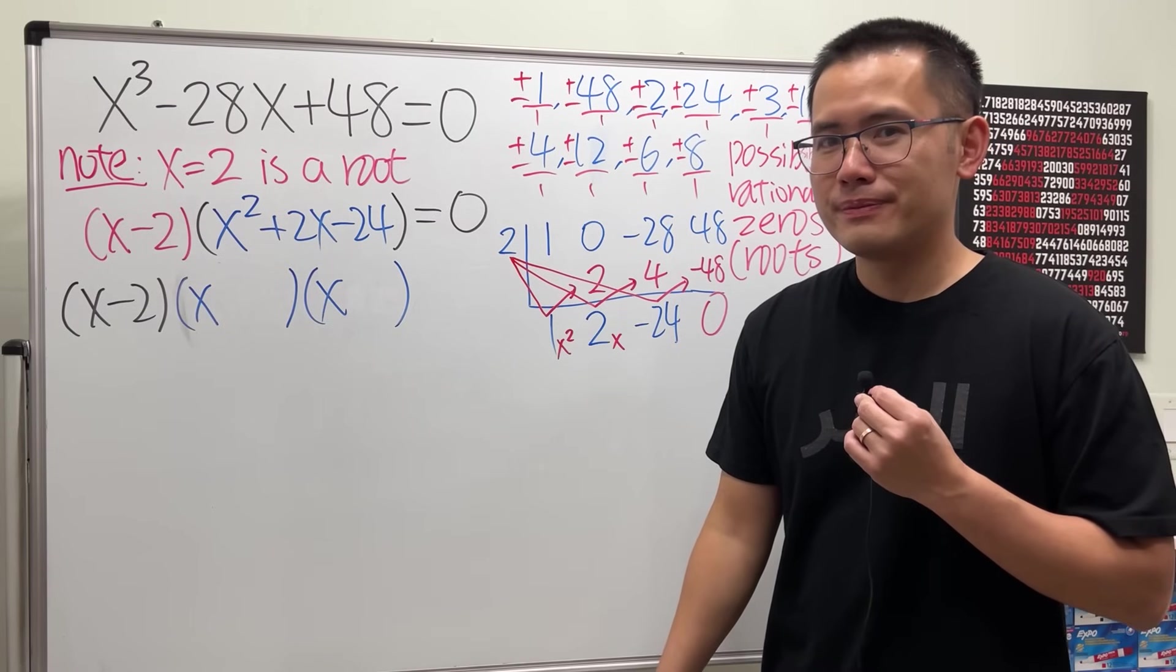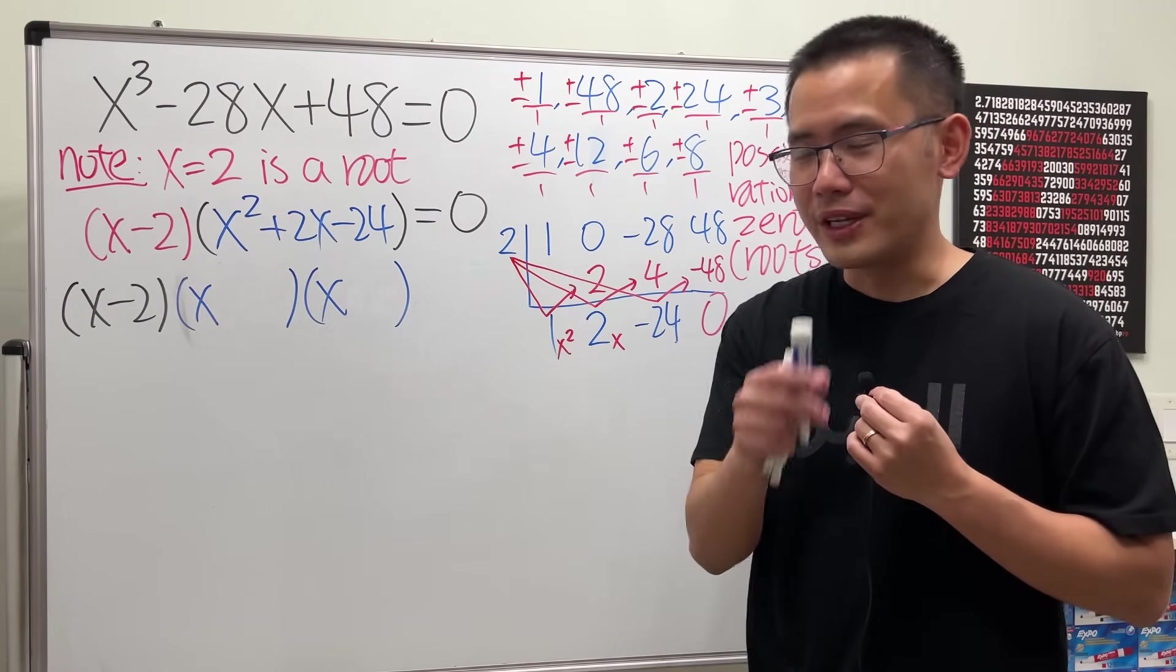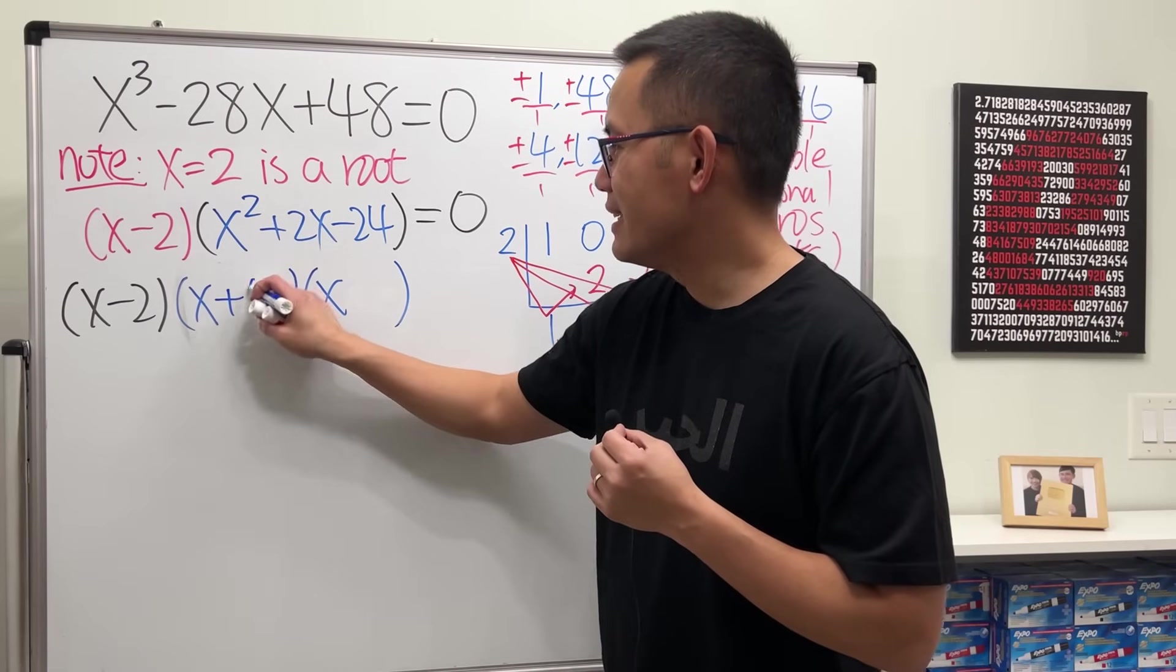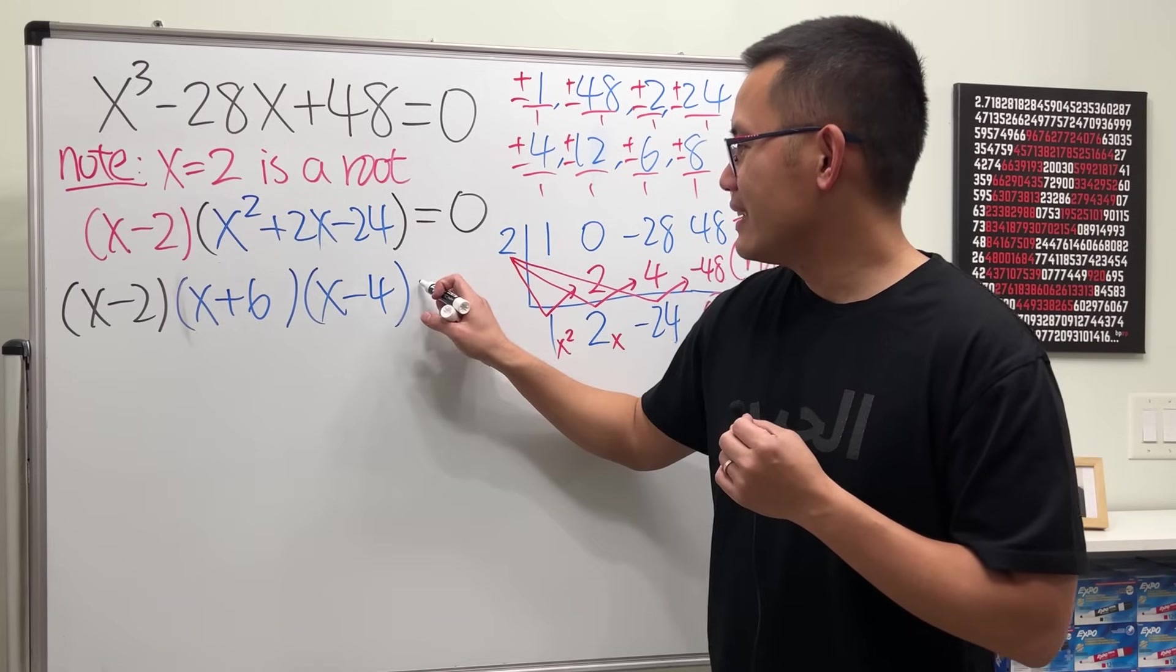6 and 4. Which one's negative? Negative 4, yes good. So plus 6 and then minus 4, and that's equal to 0.